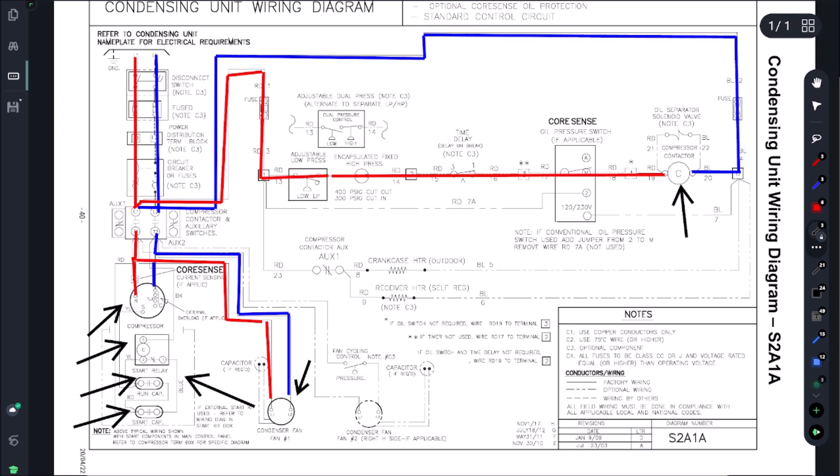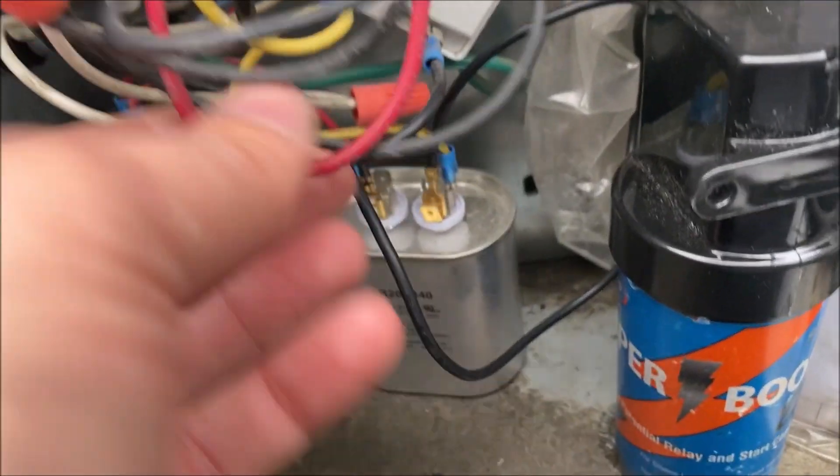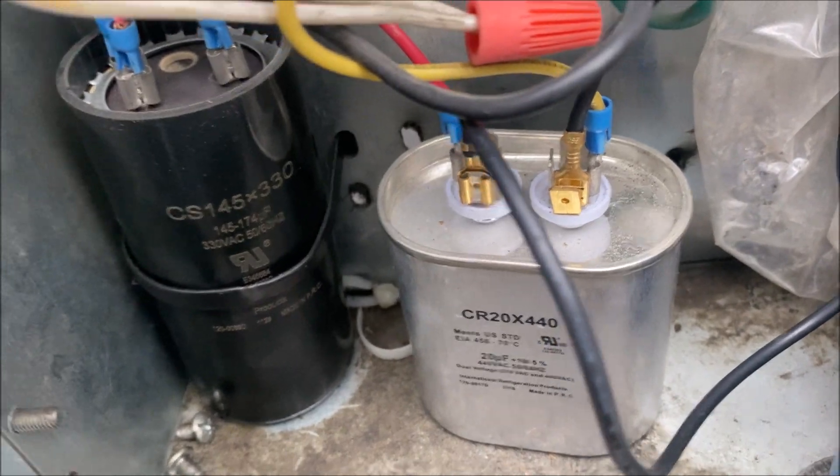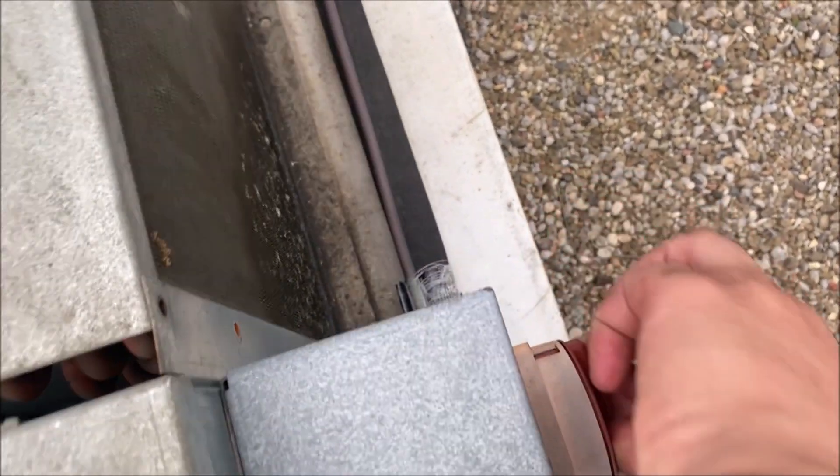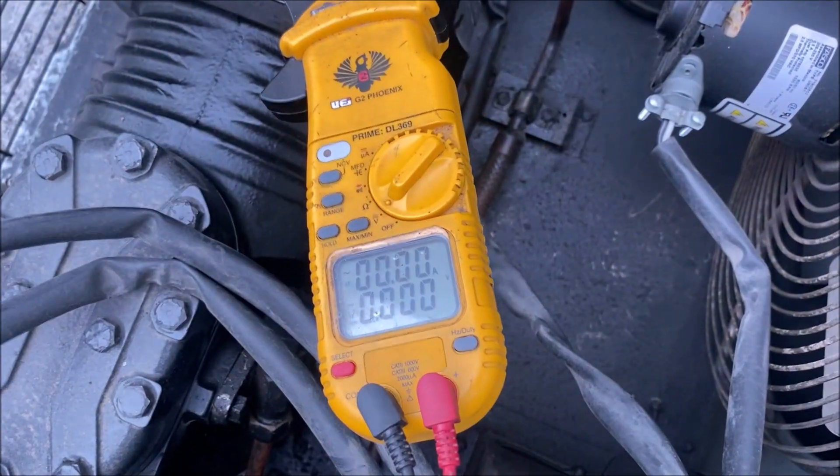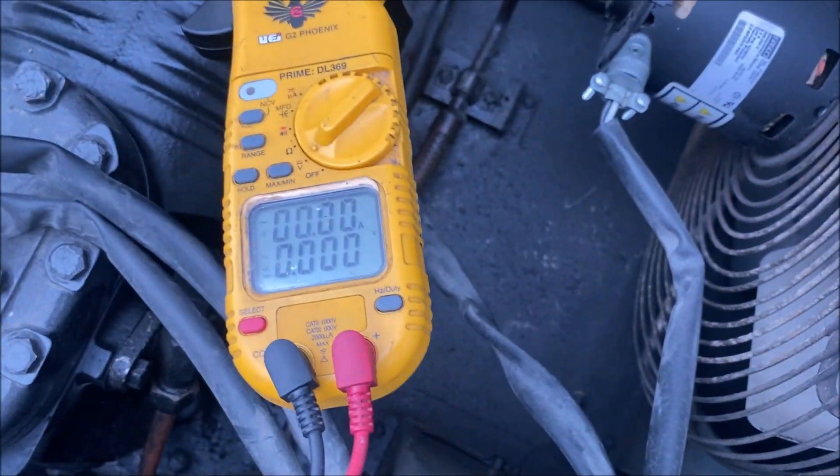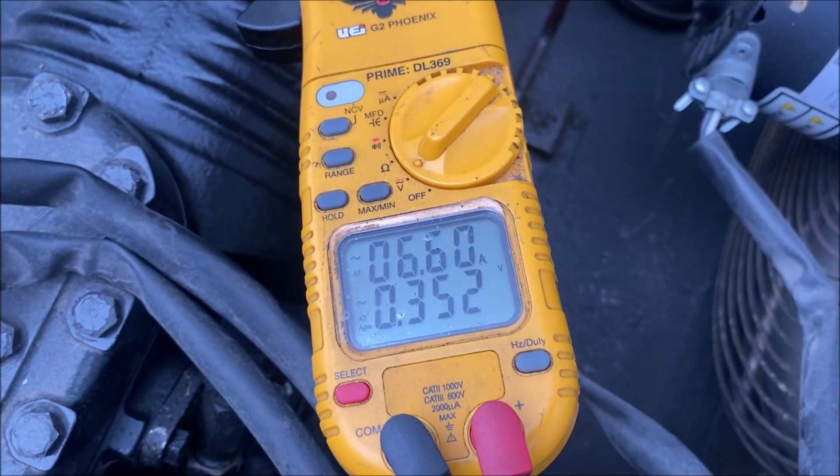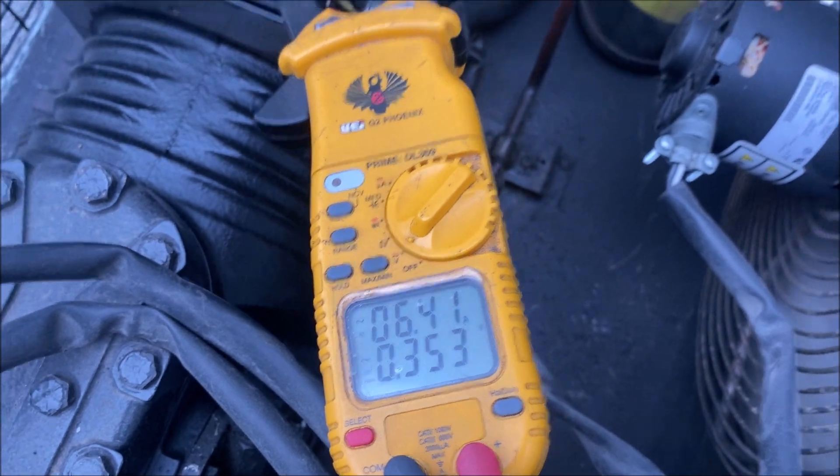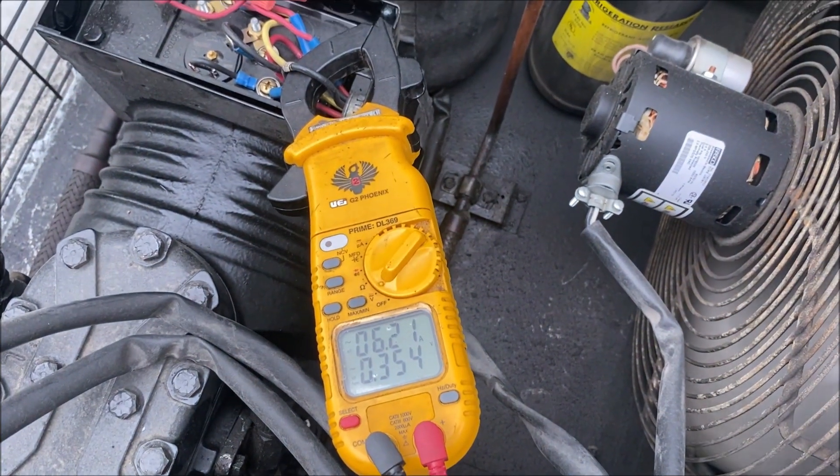All right, it's the moment of truth here. We got our super boost hooked in. We hooked it in parallel with our run cap. Let's fire up, fingers crossed. See if we can save this compressor. 18 amps down to 6 amps. Beautiful, she's running! So that means the compressor's still good, start components are bad.